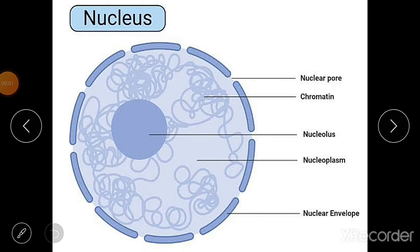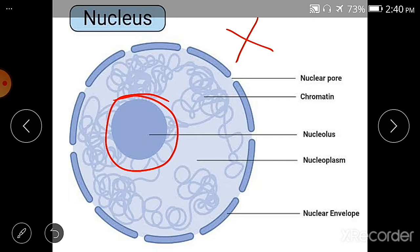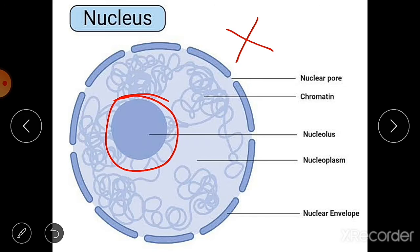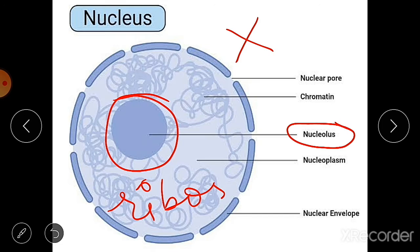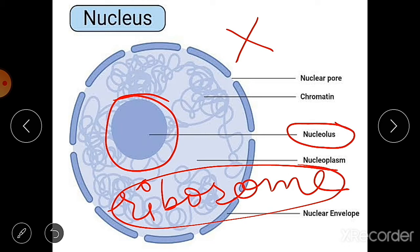The nucleoplasm contains the nucleolus and chromatin material. The nucleolus means 'nucleus within the nucleus.' It may be one or more in number and is not bounded by any membrane. It is rich in protein, DNA (deoxyribonucleic acid), and RNA (ribonucleic acid) molecules. The nucleolus acts as a site for ribosome formation and is known as the factory of ribosomes. These ribosomes are helpful in protein synthesis in the cytoplasm.